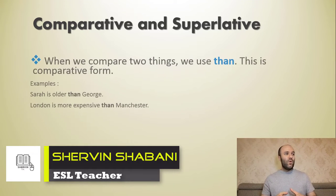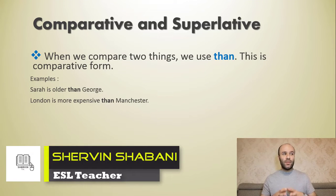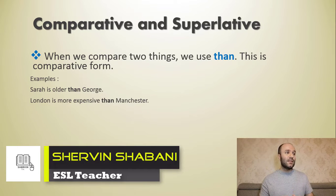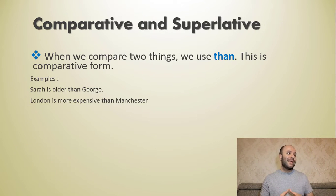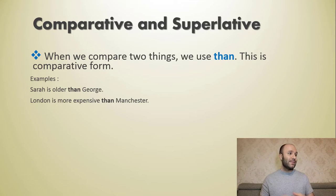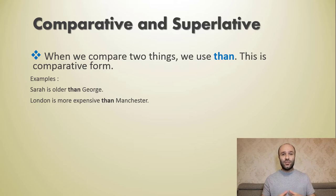When we compare two things we use 'than' — this is the comparative form. Examples: Sarah is older than George. London is more expensive than Manchester.